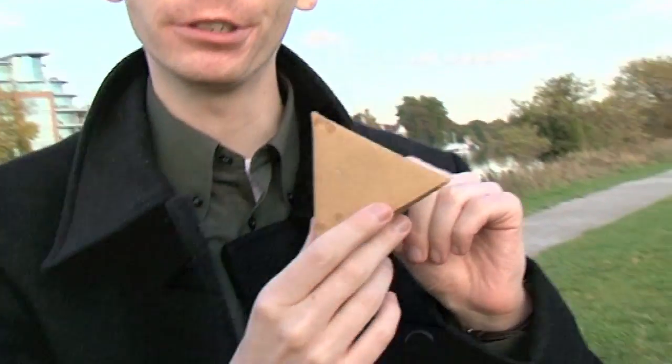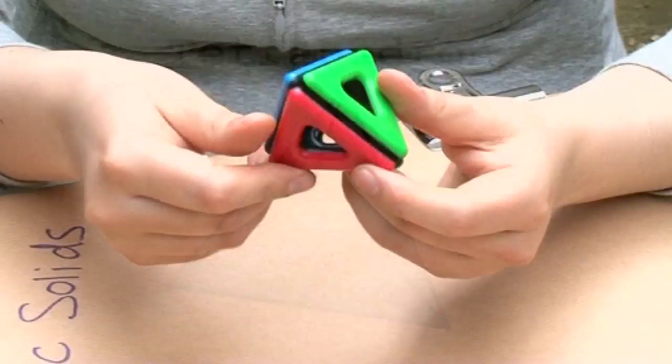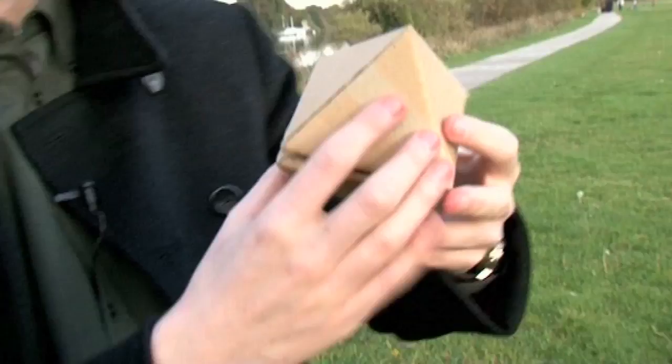This is in fact called a tetrahedron. It's like a pyramid, but it's got a triangular base, not a square base. A tetrahedron is four triangles.